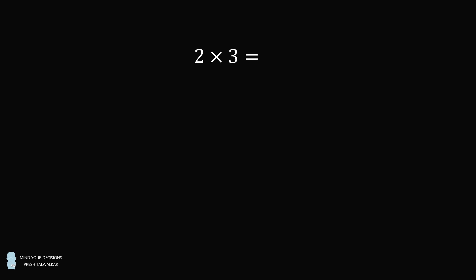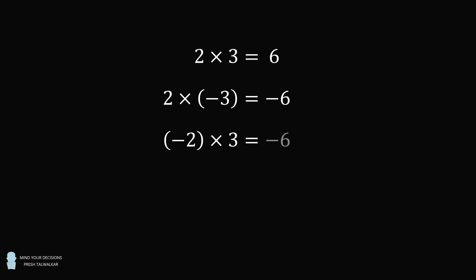Hey, this is Presh Talwalkar. What happens when you multiply two numbers? You probably memorized the rules in school. A positive times a positive is a positive. A positive times a negative is a negative. And a negative times a positive is a negative. These three rules make sense. But there was also a fourth rule: a negative times a negative is equal to a positive. This is one of the more confusing rules of arithmetic.